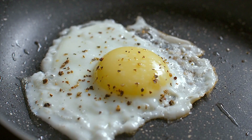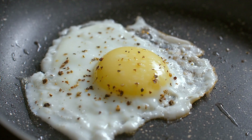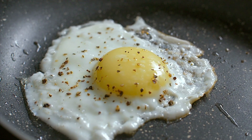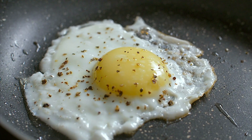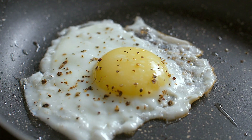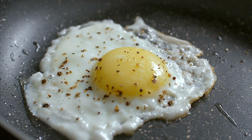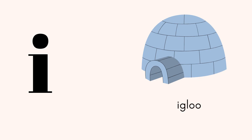E for egg. Egg means अंडा। E हमारा क्या हुआ? Second vowel। And third is I — I for igloo।